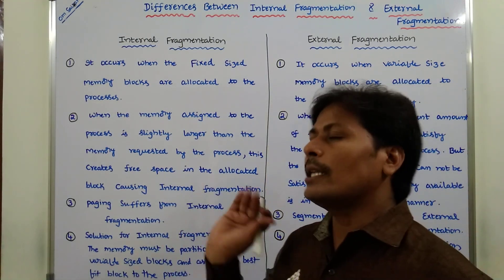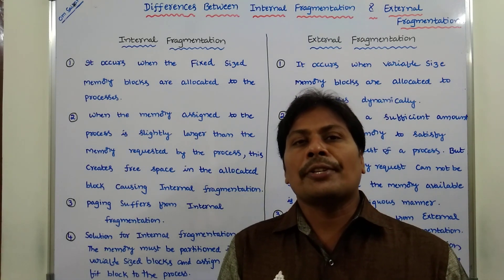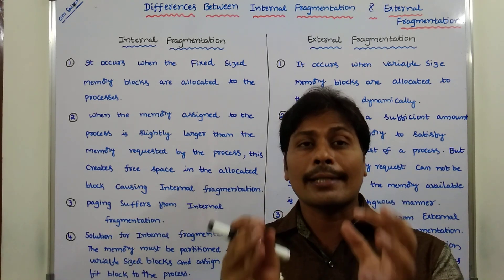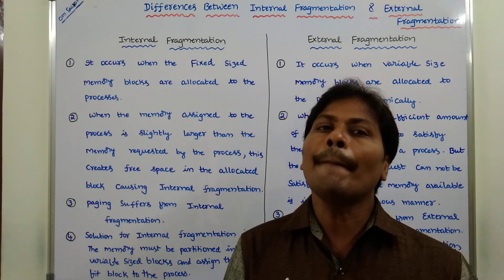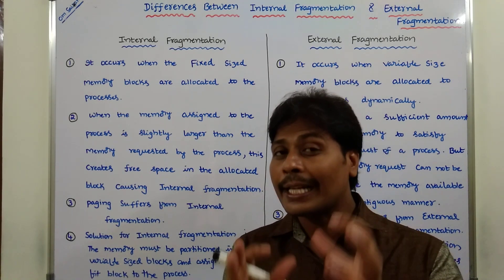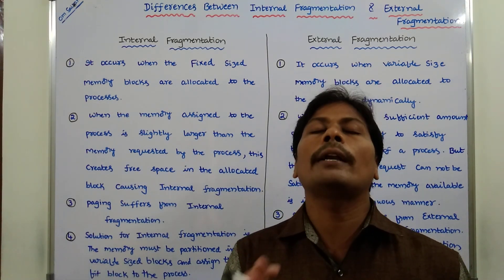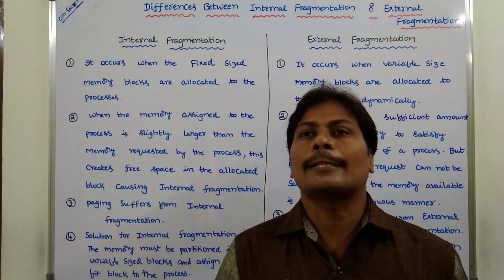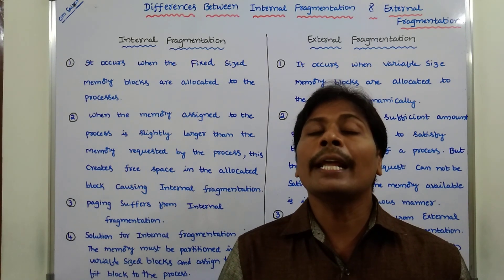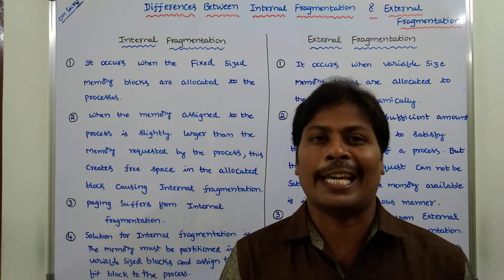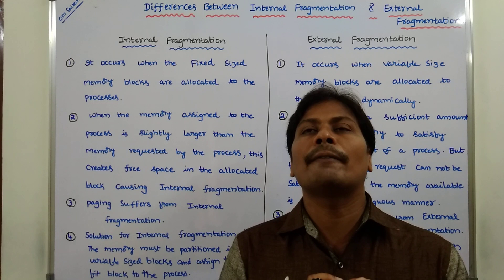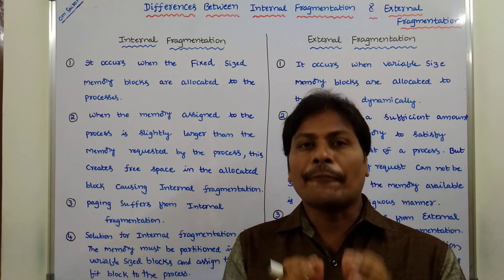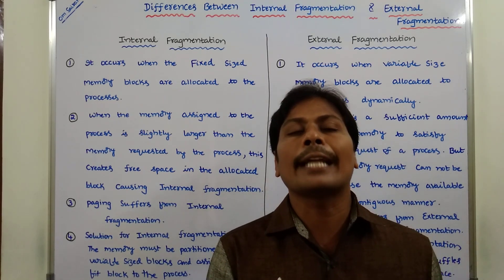Second point: internal fragmentation occurs when the memory allocated to a particular process is slightly larger than the memory requested by the process, creating a free space in the allocated block. For example, if the memory allocated is 2KB but the memory requested is 1.8KB, then 2KB minus 1.8KB equals 0.2KB of free space, which creates internal fragmentation.